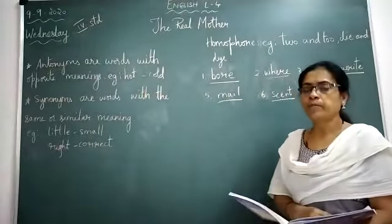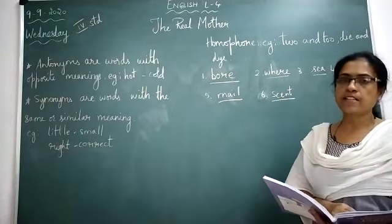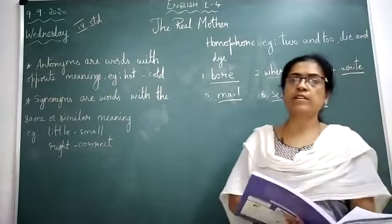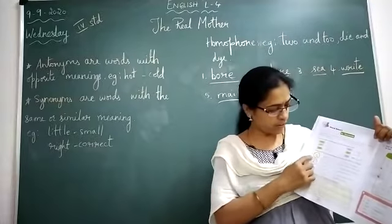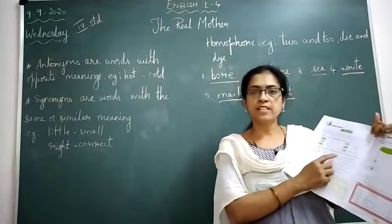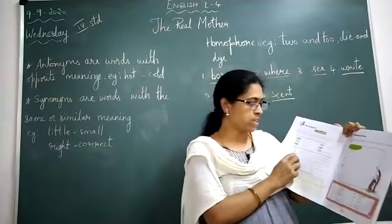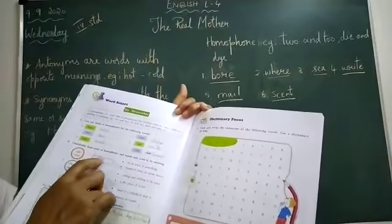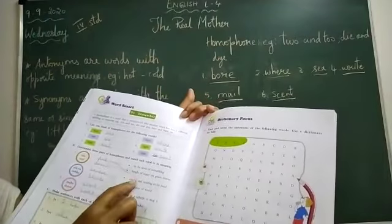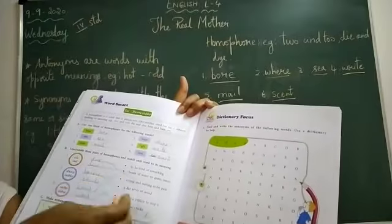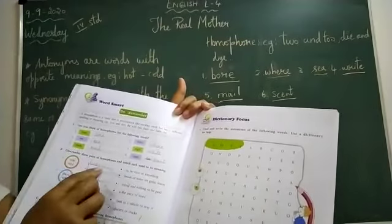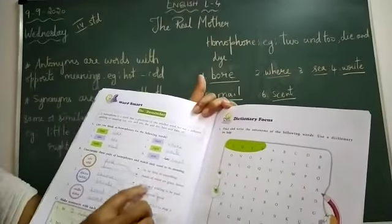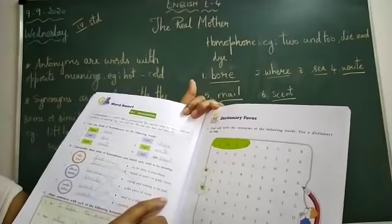Next, you have to unscramble these pairs of homophones and match each word to its meaning. You have to unscramble the pairs of words given in the circle in your textbook and match each word with the meaning. For example, the first one is 'due' — D-U-E — meaning 'owing and waiting to be paid'.